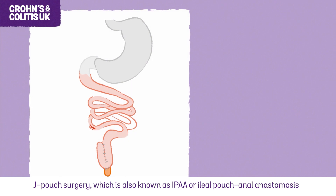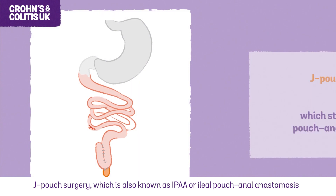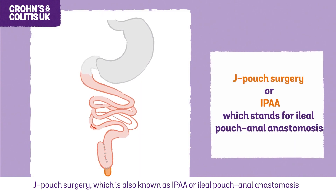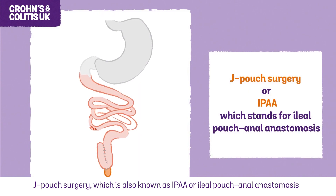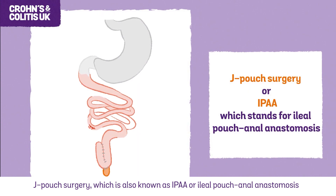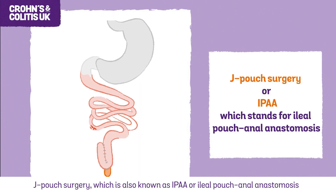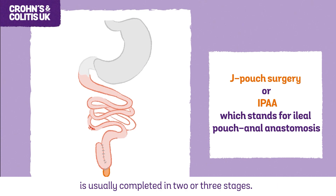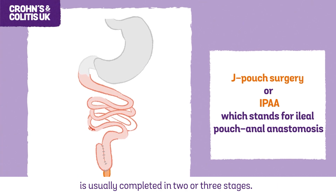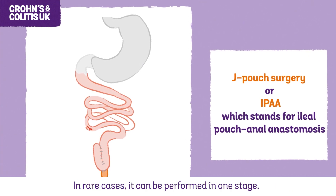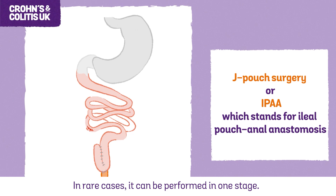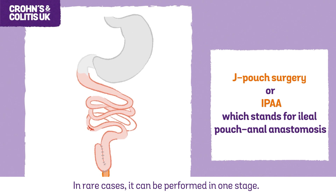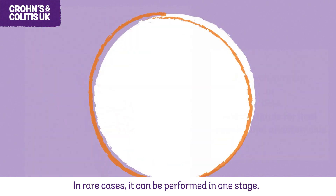J-pouch surgery, which is also known as IPAA or ileal pouch anal anastomosis, is usually completed in two or three stages. In rare cases it can be performed in one stage.